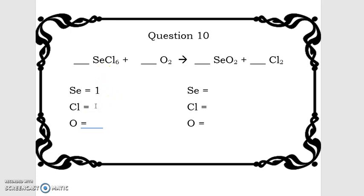For chlorine, we have six atoms of chlorine, Cl6 right there. And oxygen on the reactant side, we're going to see that we have two atoms of oxygen for O2.